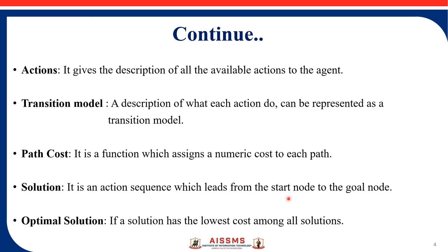For example, in a travelling salesman problem, if we have to travel from Pune to Mumbai, we can go by train, by flight, or by road via national highway — three possible solutions. The optimal solution to reach from Pune to Mumbai is the one having minimum time as well as minimum cost. That is the optimal solution.